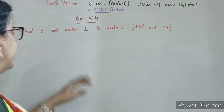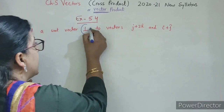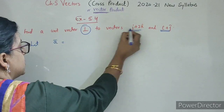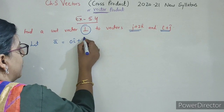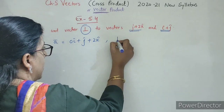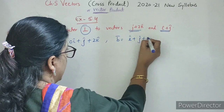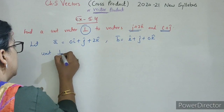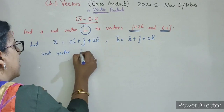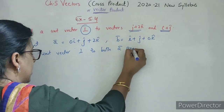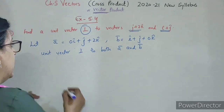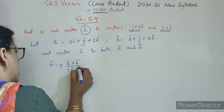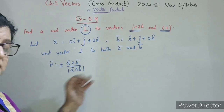Next question: in which we have to find out a unit vector perpendicular to both of these vectors. Let A bar = 0î + ĵ + 2k̂, and B bar = î + ĵ + 0k̂. Unit vector perpendicular to both A bar and B bar is: plus or minus A cross B upon mod of A cross B. So pehle hume A cross B nikalna padega.